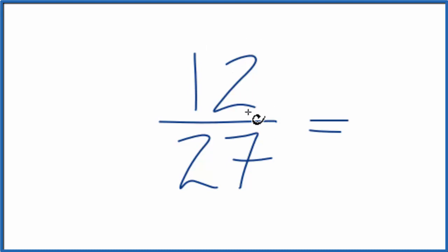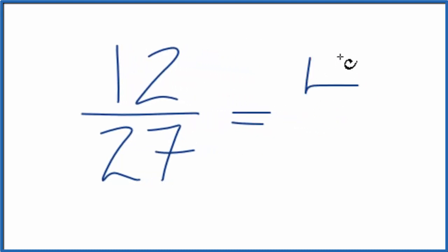The numerator, divide that by 3. 12 divided by 3 is 4. And 27, the denominator, divided by 3, that's 9.